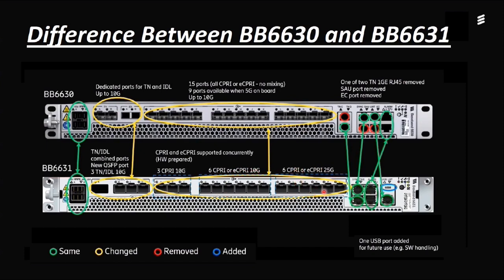We can see in the 2631 three CP, six combined CP/ECP supporting 10G, and six combined CP/ECP supporting 25G. So we get more advantage in the 2631 than the 2630 because the 2631 supports more bandwidth — up to 25G — while the 2630 supports only up to 10G. The 2631 is the latest version from Ericsson, with hardware upgrades over the 2630.